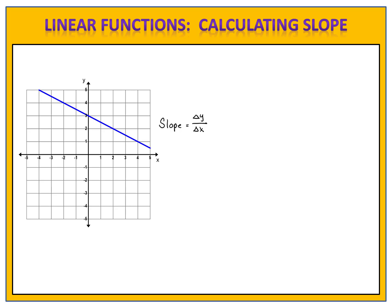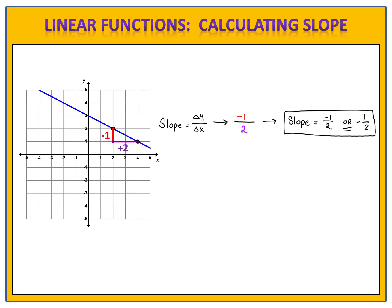We want to find the change in y over the change in x, and we begin by identifying the lattice points on the graph. We have many to choose from; we pick any two, and now we look for the change in y over the change in x. When we go from left to right on the graph, we see that the y value went down by one, so the change in y is negative one. When we look at the x values, we went from two to four — that's an increase of two, so the change in x was plus two. Negative one over two is negative one-half. That's exactly what we have here: y goes down by one when x goes up by two.